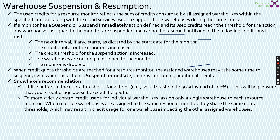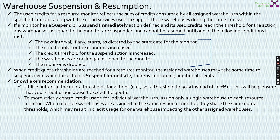The conditions under which a suspended warehouse can be resumed are: the next interval starts as dictated by the start date of the monitor; the credit quota of the monitor is increased; the credit threshold for the suspend action is increased; the warehouses are no longer assigned to a monitor; or the monitor is dropped. If any of these five conditions are met, then we can resume the warehouse suspended by the resource monitor. When credit quota thresholds are reached, the assigned warehouses may take some time to suspend even with the suspend immediate action, thereby consuming additional credits.